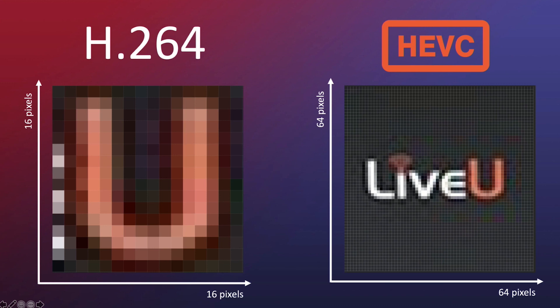For H.264 the size is fixed, so regardless of the changes in the picture, the algorithm always uses the same block size for compression. HEVC is different because it handles 64x64, but also 16x16, or everything in between.